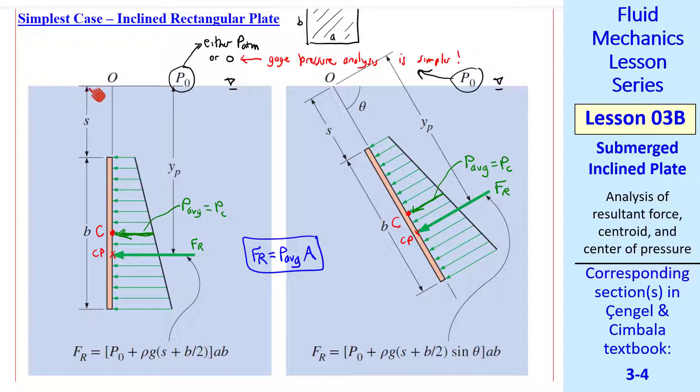Previously, we defined S as the distance from the free surface to the top of the plate. We do the same thing here, except that S is tilted at this angle, theta. S is parallel to the plate. For a rectangular plate, the centroid is located B over 2 from the top of the plate. Thus, YC is S plus B over 2 for our vertical rectangular plate.